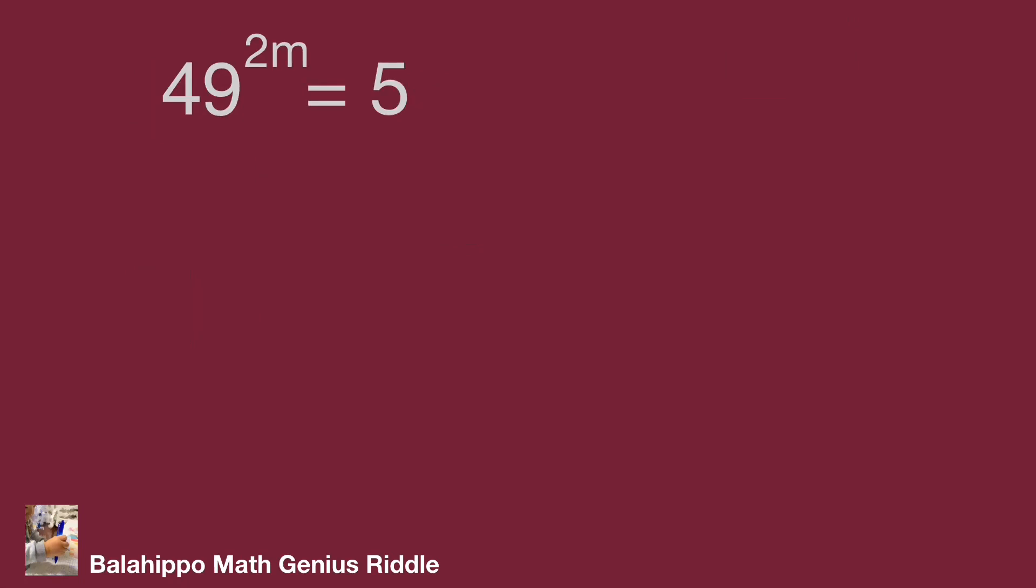49 to the power of 2m equals 7 to the power of 2 times 2m. Simplify the equation as 7 to the power of 4m equals 5.